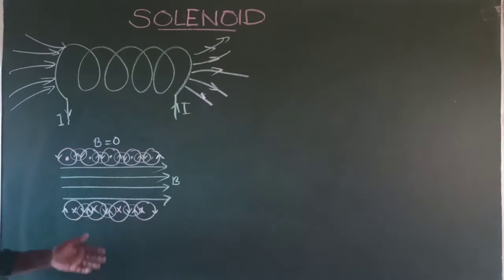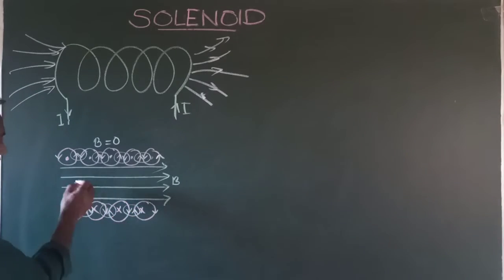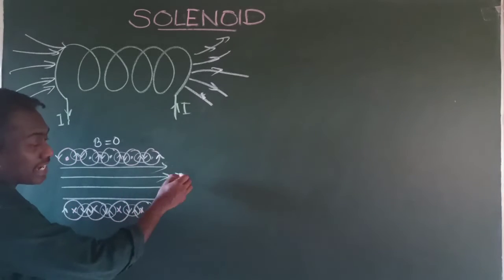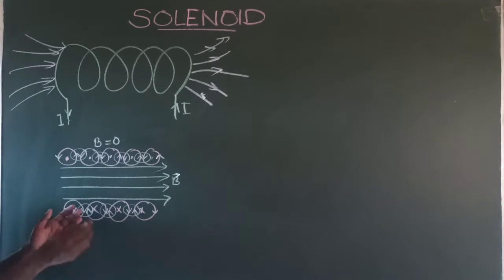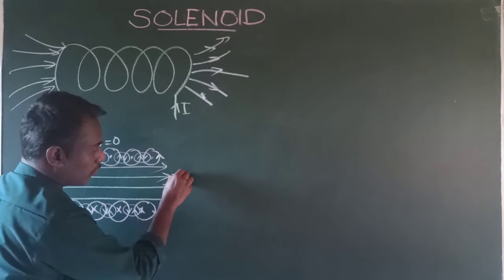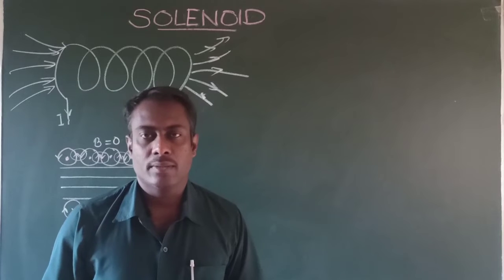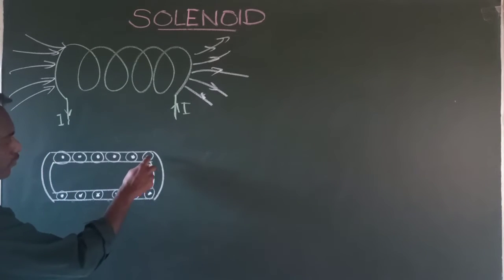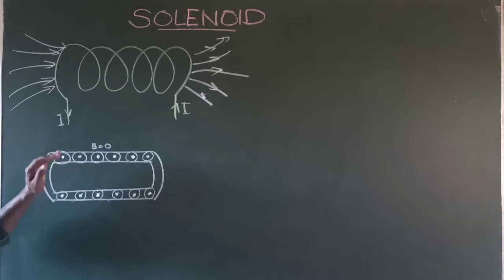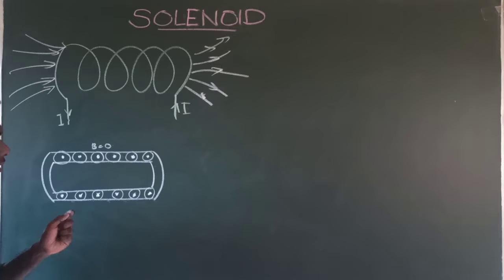So the magnetic field outside the solenoid is equal to zero. Inside the solenoid, the direction of the magnetic field is along the axis of the solenoid, and the magnetic field will be obtained here. Now assume that this solenoid has N number of turns per unit length, and a current I is flowing through the solenoid.